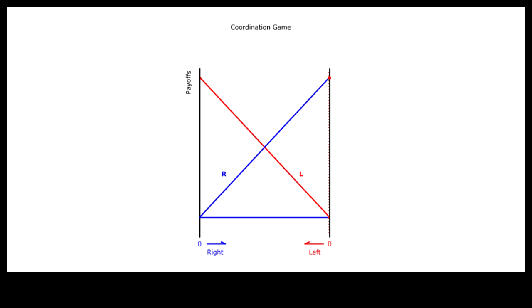In other words, people prefer to be with the majority, regardless of what the option might be. So the payoff for R goes up when more people are choosing R. And the payoff for L also goes up as more people are choosing L.